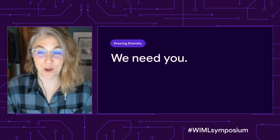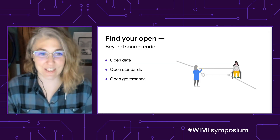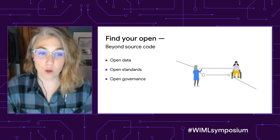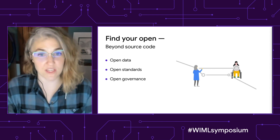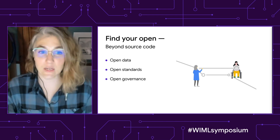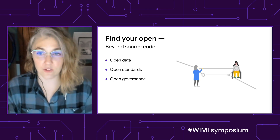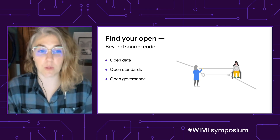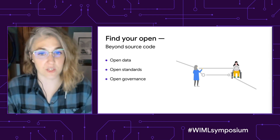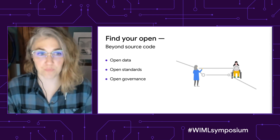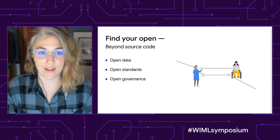Here is the part where I get to ask you for help. First, I would like to encourage you to find your open. Open source software is absolutely essential in our modern technology world. However, there are many other opens which are part of the ecosystem. Open data makes it possible for us to see, understand, and critically evaluate applied research and the assumptions it makes about our world. Open standards make the creation of technology available to everyone, rather than relegating it behind expensive proprietary standards.